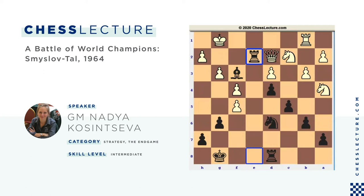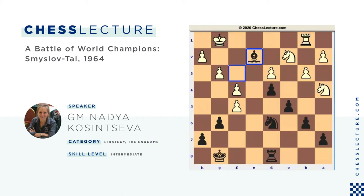Another thing — I think he just did not expect this Qe2 move. As it often happens in chess, when your opponent surprises you with an unexpected move, you can make a mistake quickly. So after Rxe2, Rxe2, white preferred to give up the queen. Qe2, Bxe2, and then Nb2.